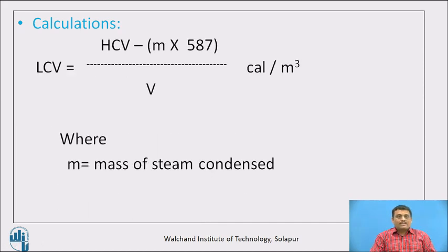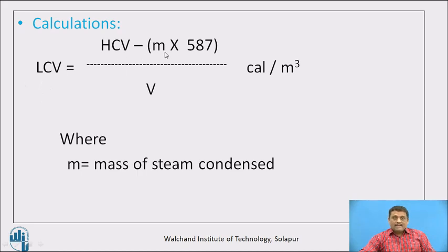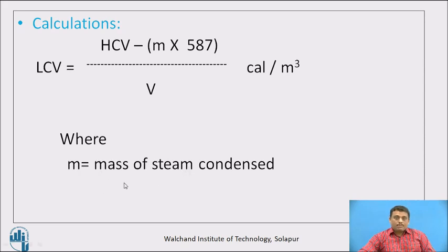Now we will see how to calculate LCV. LCV — the lower calorific value, also known as net calorific value — is determined using the equation: LCV = HCV − (M × 587) / V, where M is the mass of steam condensed. The steam forms as a combustion product, gets condensed by the circulating water inside the combustion chamber, and is collected at the bottom — denoted by small m, the mass of steam condensed.